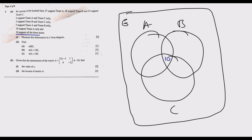Now let us fill in the remaining regions, starting from the bottom and going up. We have 18 who support Team A only — that means nothing in B and nothing in C — so we place 18 in the A-only region. Then 7 support Team A and Team B only, meaning they are in A and B but not in C, so we place 7 in the A intersection B only region.